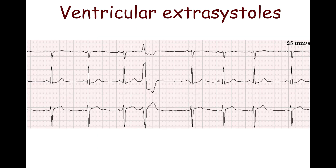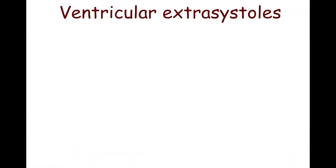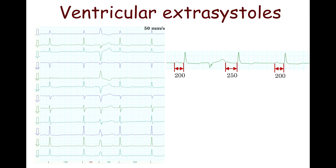The retrograde P-wave is another important feature of a ventricular extrasystole. It results from retrograde impulse conduction from the ventricles to the atria. Retrograde P-wave morphology is different from that of sinus origin. It usually appears on the ST-segment or the initial portion of the T-wave. In a sinus beat following a ventricular extrasystole, the PR interval may be prolonged.